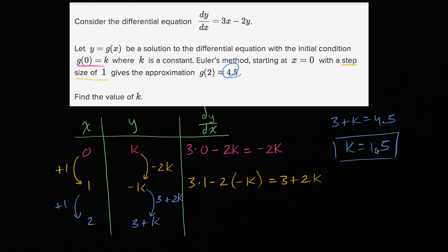And you can verify that. If this initial condition, if g(0) equals 1.5, and you put 1.5 over here, then you would get 4.5. And we're done.